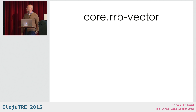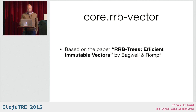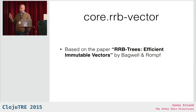Let's start with core.rrb-vector. It's based on a paper from a few years ago called "RRB Trees: Efficient Immutable Vectors" by Bagwell and Rompf, from the Scala community. And they are very similar to the Clojure built-in vectors.